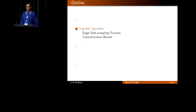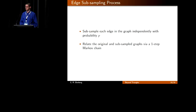Now I'll discuss the first contribution, the three profile sparsifier. Our subsampling scheme is very simple. It's the simplest thing you can do. We sample each edge in the graph independently with probability p. Observe that the subgraphs in the original graph are related to those in the subsample graph by a Markov chain.